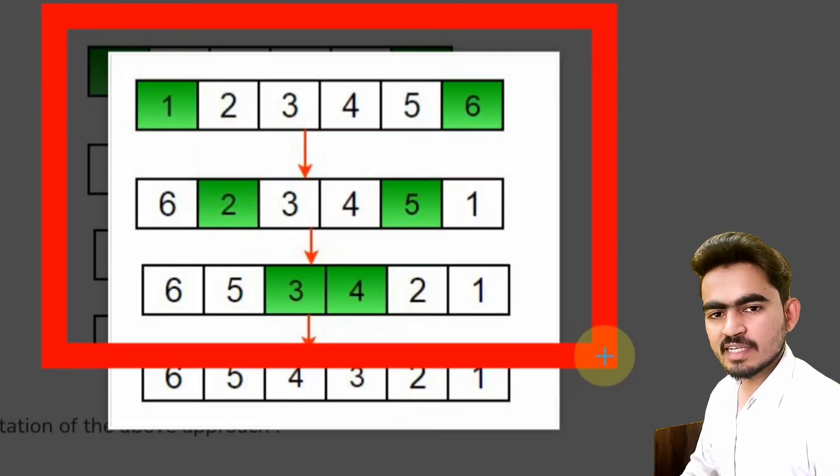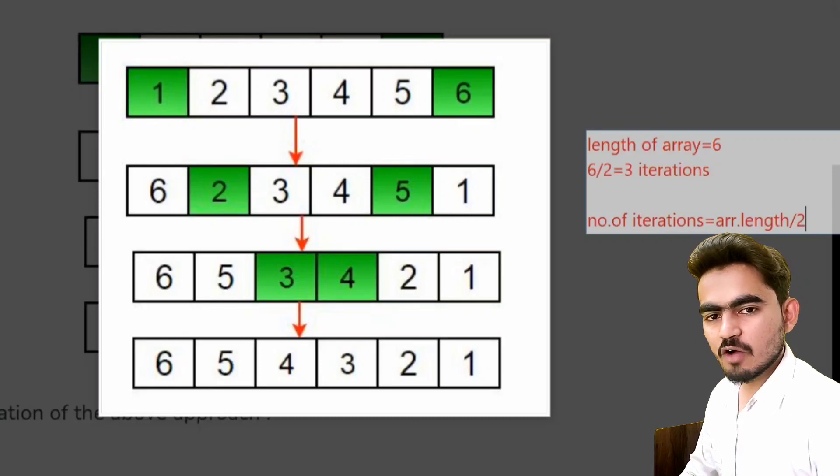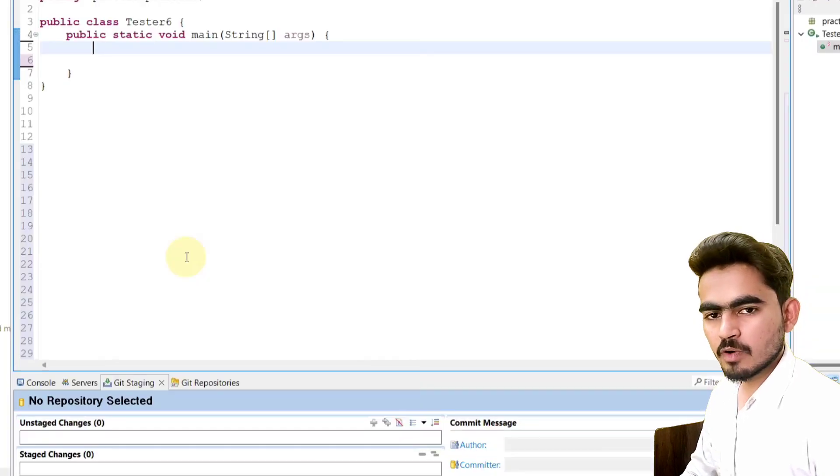If you observe here, how many iterations are required to get our resultant array? 3 iterations. What is the length of the array? 6. That means, from this it is clear, we will get our resultant array within array.length by 2 iterations. Now dive into the coding part.